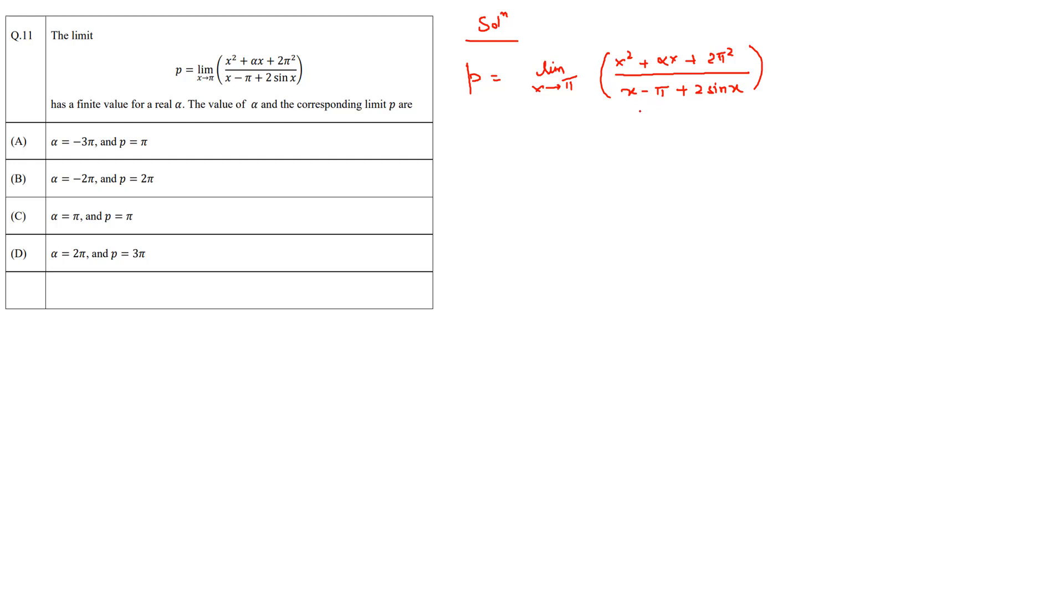If we substitute x equals pi, we will see that the denominator becomes zero. So let's say f of x is x squared plus alpha x plus 2 pi squared, and g of x is the denominator which is x minus pi plus 2 sin x.